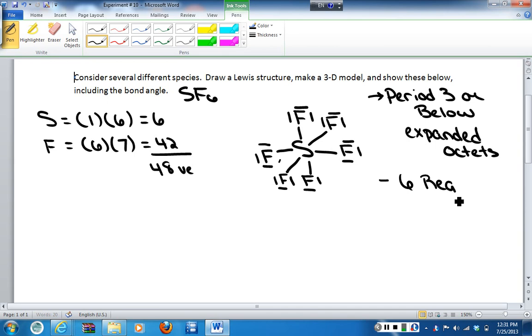That narrows it down a bit in terms of what our geometry is going to be. But we have to take it a step further and look and determine what kind of regions of electron density are on the sulfur. And what we see is that they are all 6 bonding pairs. So therefore, that tells us that our geometry is octahedral.